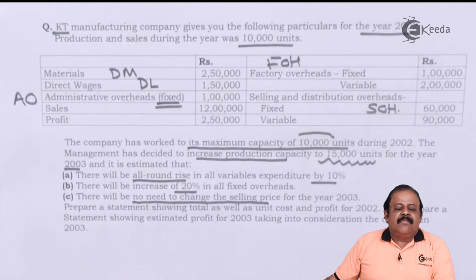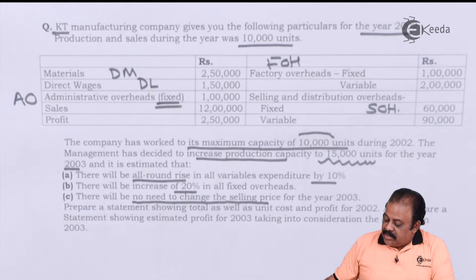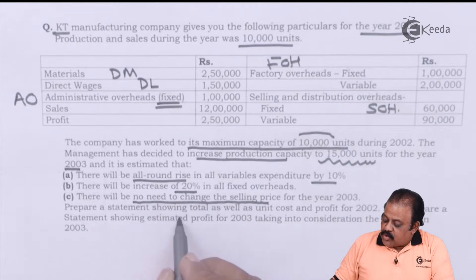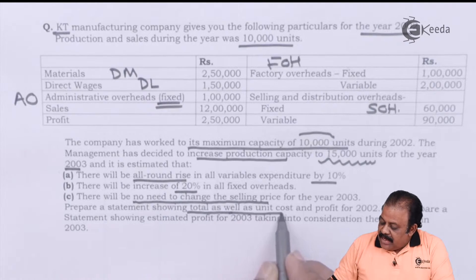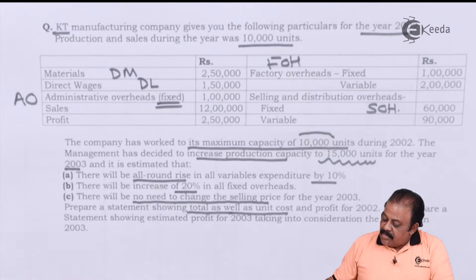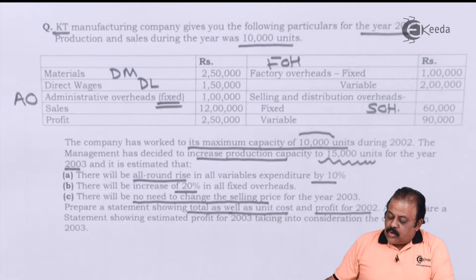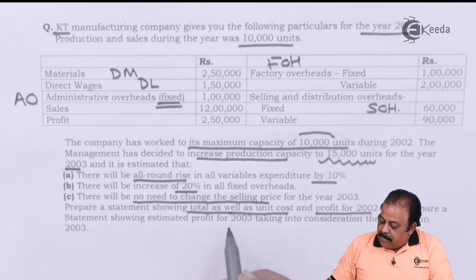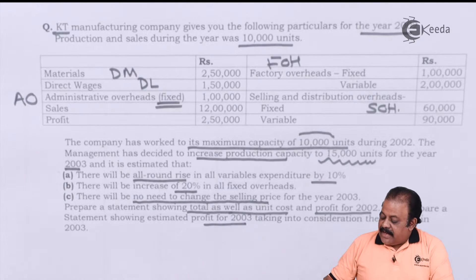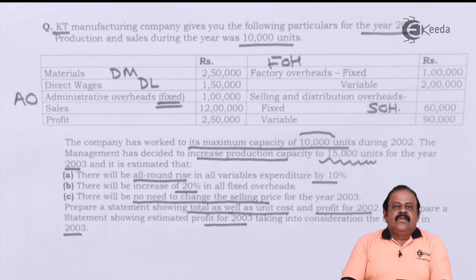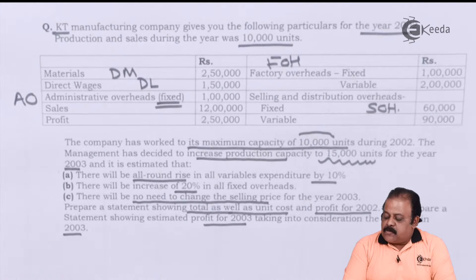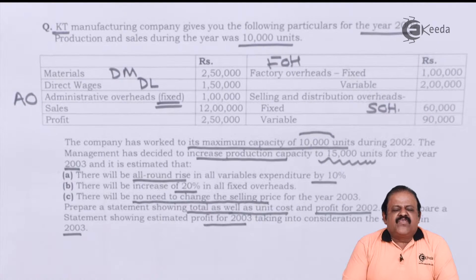There will be no need to change the selling price, meaning it will remain the same in the year 2003. We are required to prepare a statement showing total as well as unit cost and profit for 2002, and also prepare a statement showing estimated profit for 2003 taking into consideration the changes. Let us first understand the difference between fixed overheads and variable overheads.